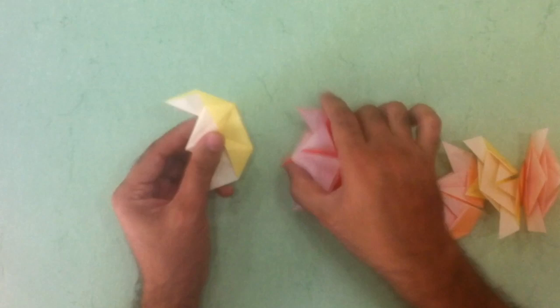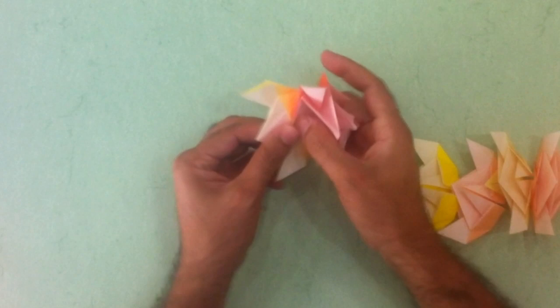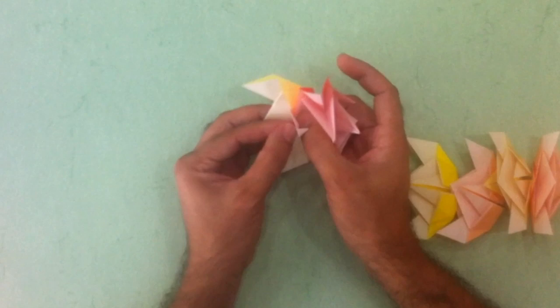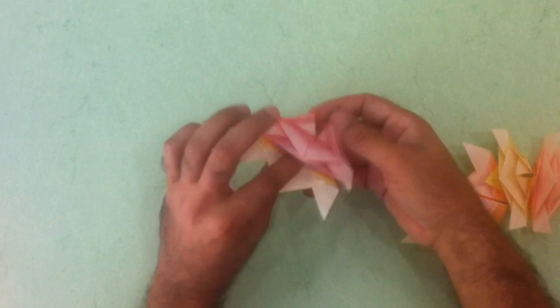You take one tab. You put it into the pocket. And then you see this one. It's too long to fit here. So I fold the tip a little bit. And then inside. Squeeze it very hard. Because it tends to open. If you want you can glue it. But you don't have to.